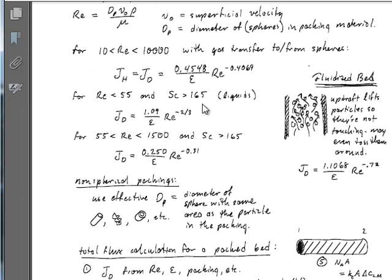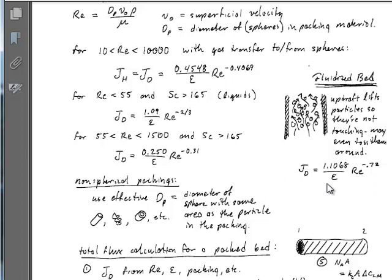There are different correlations for different parameter ranges. For a Schmidt number greater than 165, which applies to liquids flowing through a packed bed, there are different correlations depending on the Reynolds number. Below a Reynolds number of 55, the J factor equals one expression; above 55, the Chilton-Colburn J factor takes a different form. There are also results for fluidized beds, where flow is fast enough to lift the particles, giving yet another J factor correlation.